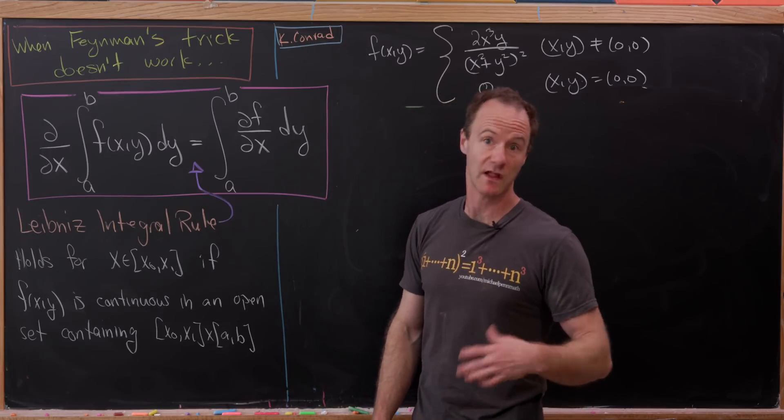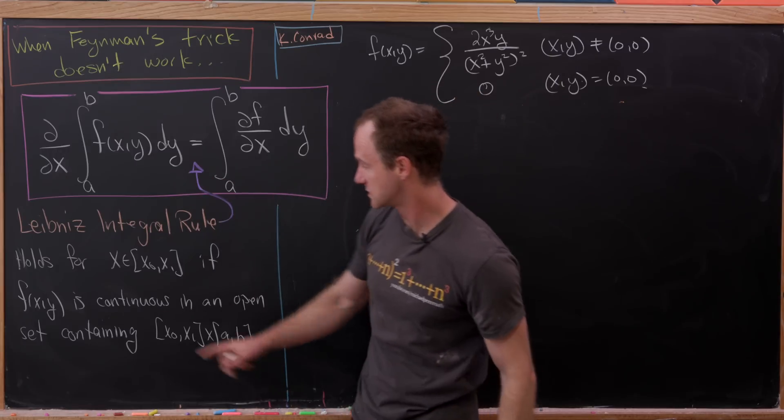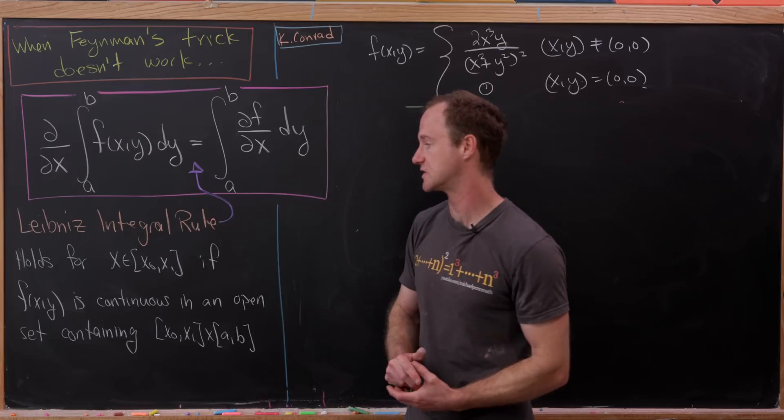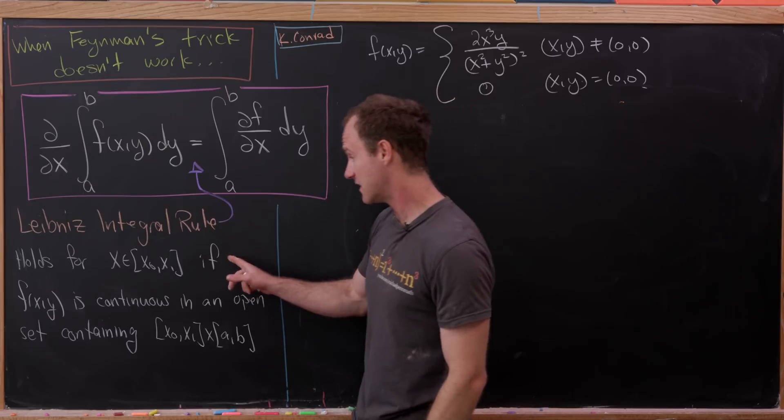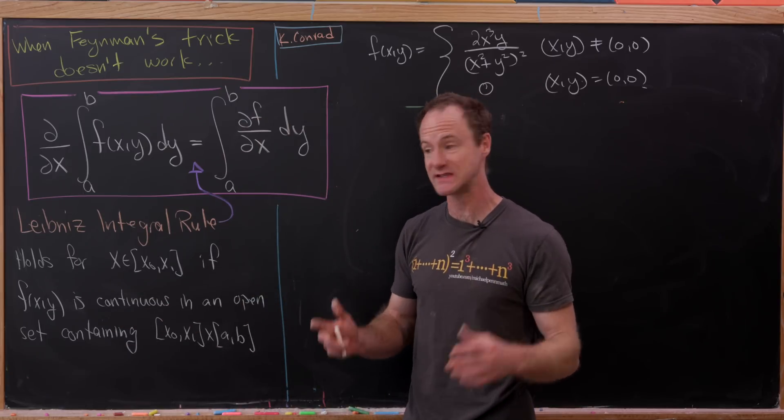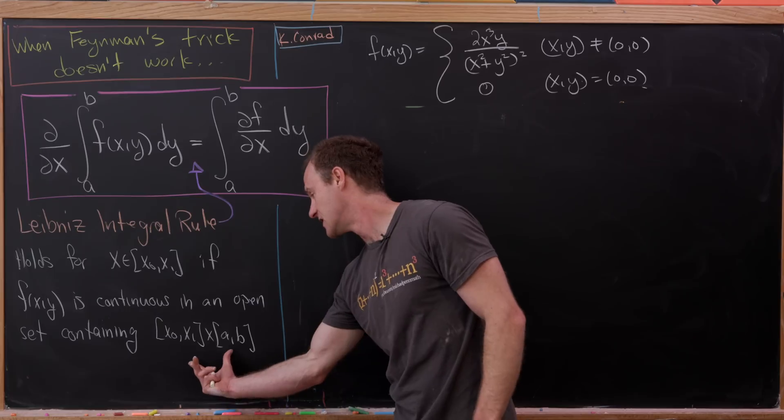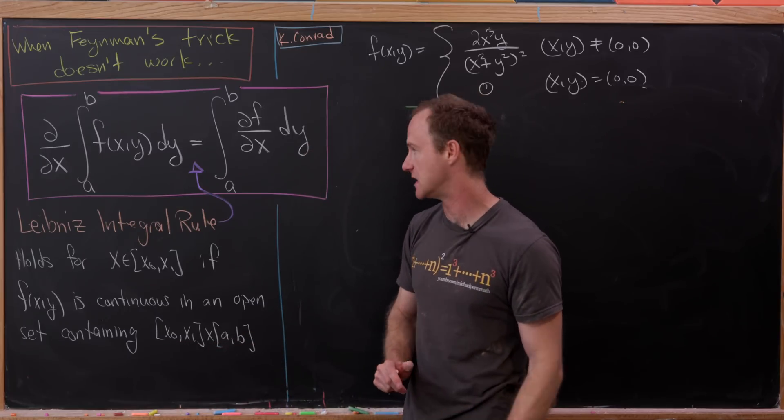The Leibniz integral rule says that this equality holds for all x on a closed interval between x0 and x1 if f of xy is continuous in an open set that contains this rectangle, x0 to x1 cross a to b.